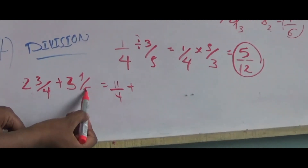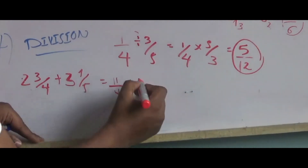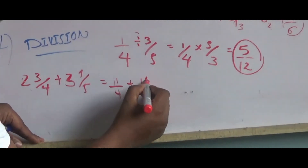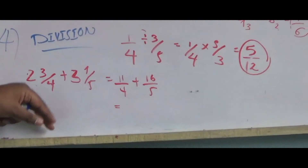3 times 5 is 15, plus 1 is 16. So 16 over 5.